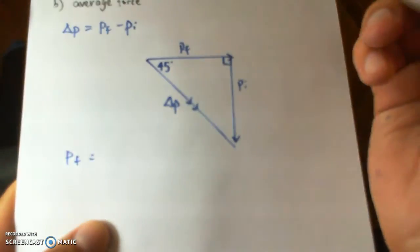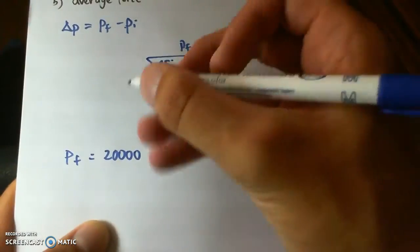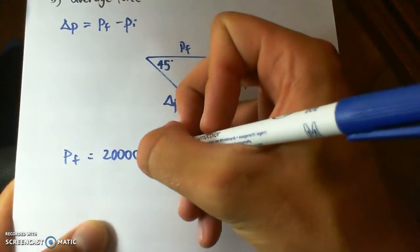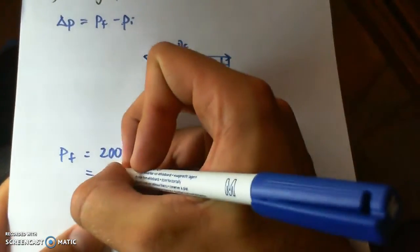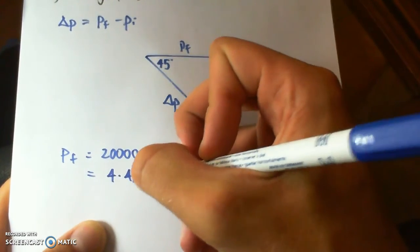So the momentum is equal to mass times velocity, 20,000 times 2,000, 4.4 times 10 to the 7.